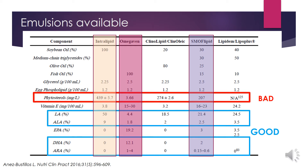There is growing evidence implicating soybean-derived emulsions in the pathogenesis of PNALD. Soybean-derived lipid solutions contain phytosterols, high concentrations of pro-inflammatory omega-6 polyunsaturated fatty acids, and low concentrations of antioxidants. Phytosterols are thought to have a deleterious effect on biliary secretion. Accumulation of lipids in the hepatic Kupffer cells may further impair liver function. Therefore, the higher the amount of phytosterols, the higher the risk of PNALD, so a low concentration of phytosterols in a lipid emulsion would likely serve as a solution.